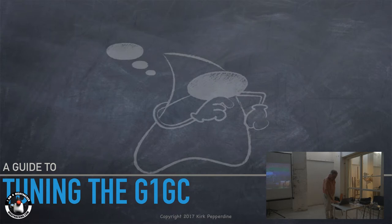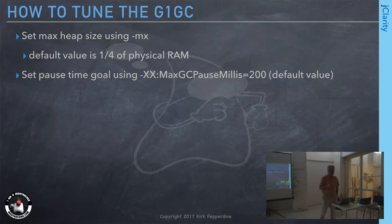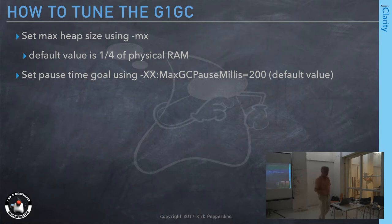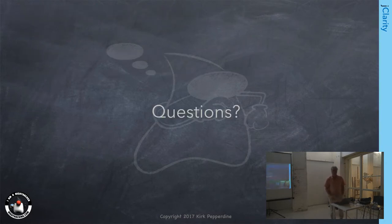So the question is: how do you tune the G1 GC garbage collector? What we do is set the max heap size using the -Xmx parameter. If you don't want to set it, the JVM will just start with a quarter of physical RAM. Then you can set a pause time goal—I don't know what it's good for, but you can set it. If you don't set it, it's 200 milliseconds. And then basically we have tuned the collector and we're done. Any questions?